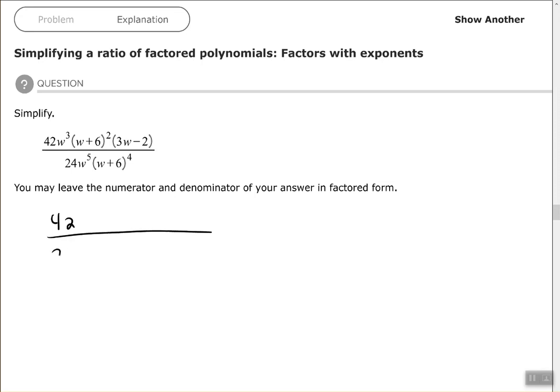So 42, I'm going to put the 42 over the 24 because those may be able to be simplified since they are regular numbers. I'm going to put the monomial of W to the third over the monomial of W to the fifth. I'm going to put the binomial of W plus six squared over the binomial of W plus six to the fourth because those are like binomials. And then the 3W minus two, it doesn't have anything like it, so I'm just going to put it in the numerator where it was.